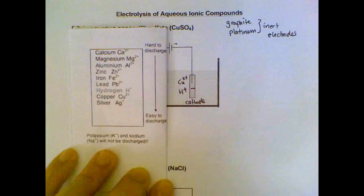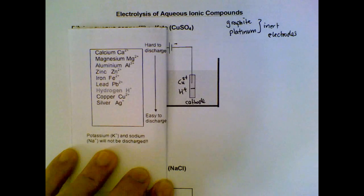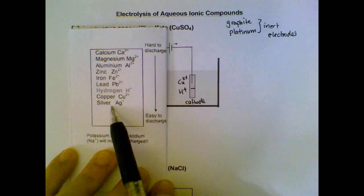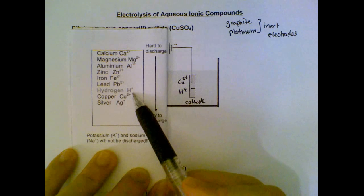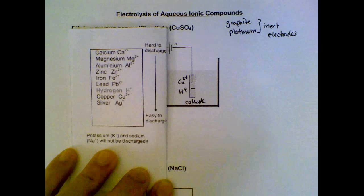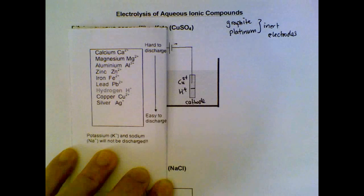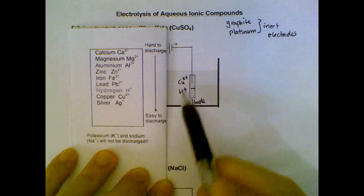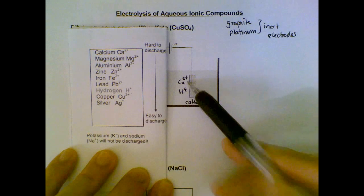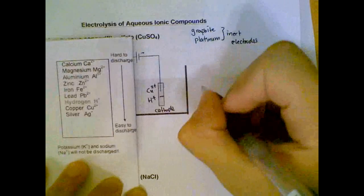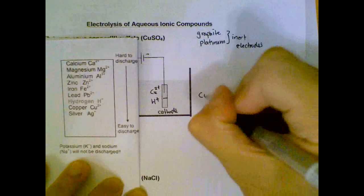We have a representation of selected metals from calcium to silver. What is important is the position of hydrogen. Hydrogen is above copper in the reactivity series. In this case, comparing copper and hydrogen, it is easier to discharge copper than hydrogen. So the ion that undergoes reduction at the cathode will be the copper ion, Cu²⁺.